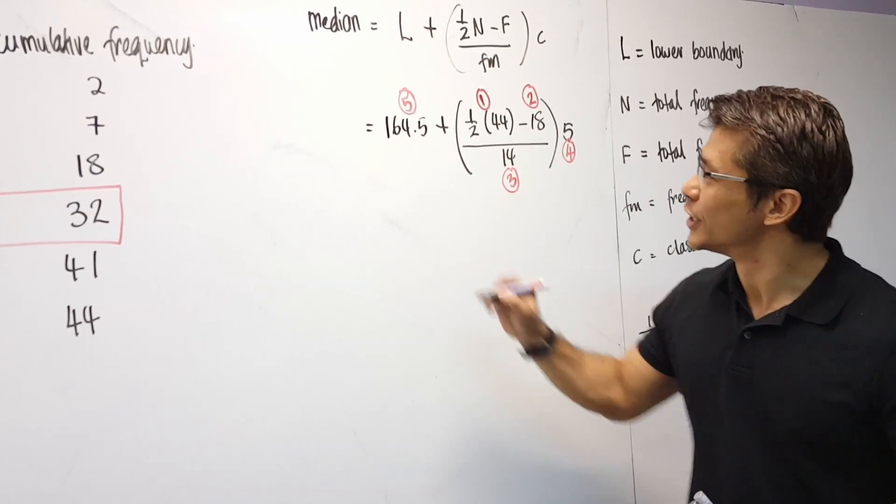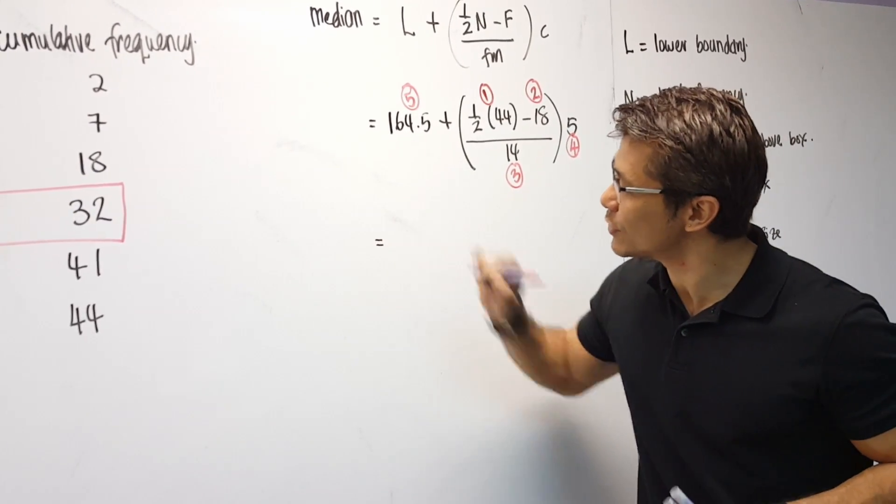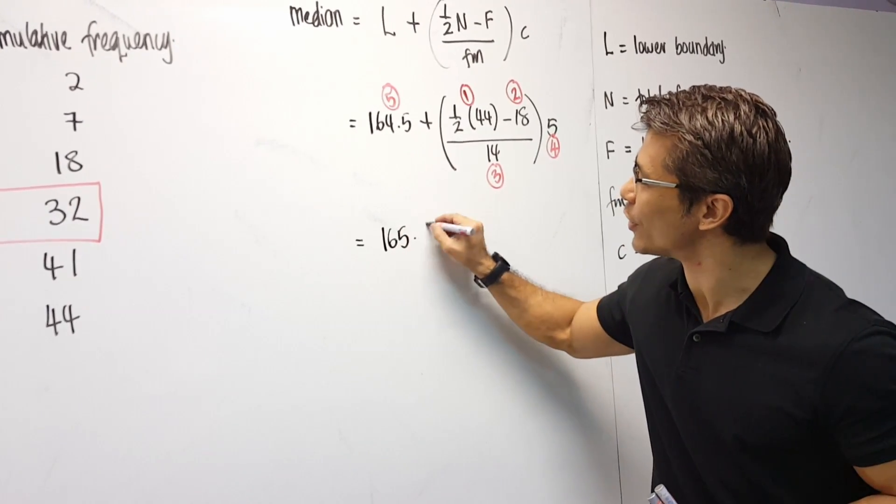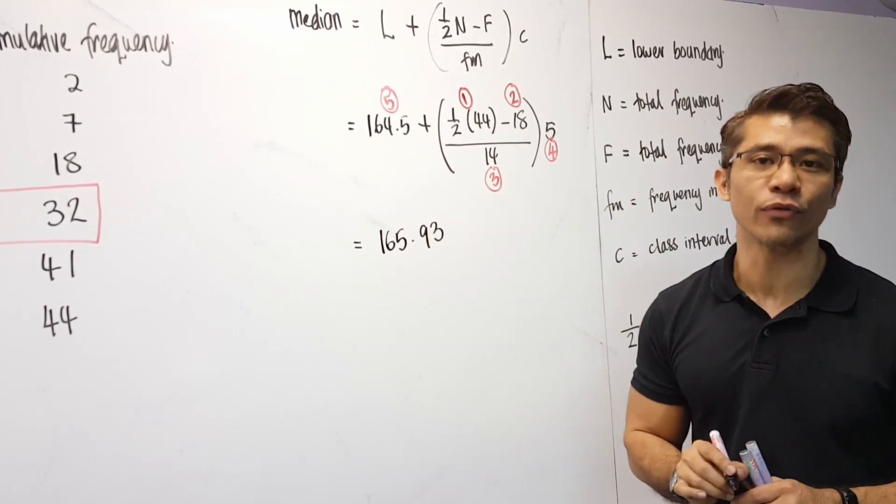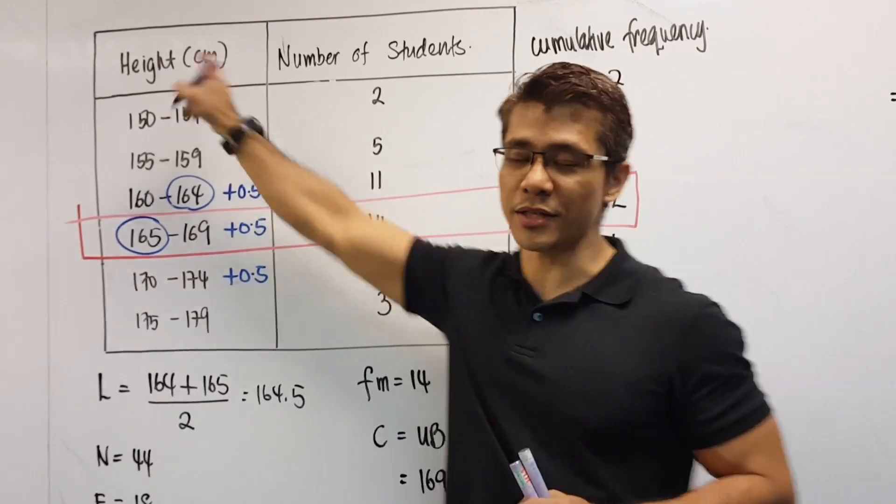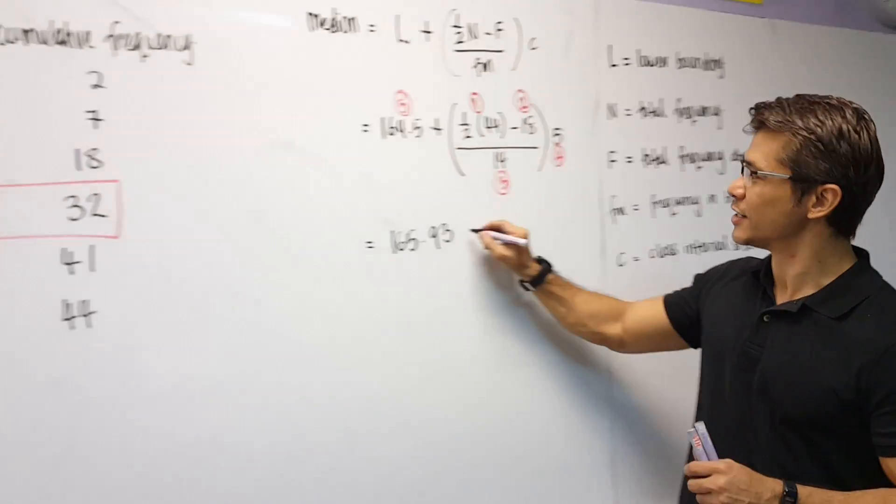So, have you got your answer? Well, if you have counted in the correct sequence, in the correct order, you should get 165.93. Oh, don't forget. The height of the students given here is in centimeters, which means I need to write centimeters.